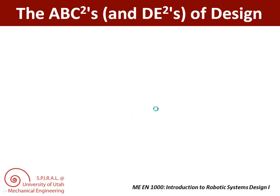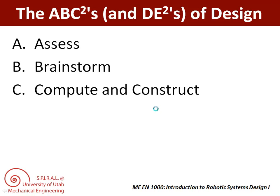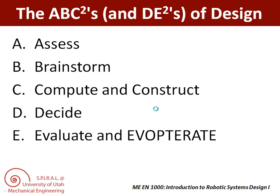In our spiral curriculum, we use the ABCs of design. As you'll note from the slide heading, these are actually the ABC squared and DE squareds of design — there are a lot of steps. We first assess, then brainstorm, then compute and construct, then decide, and finally we evaluate our resulting designs, often finding that we need to iterate. That is, we find that our designs evolve as they are optimized.